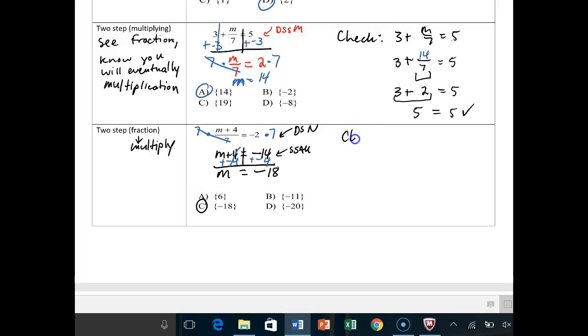Same as usual. M plus 4 over 7 equals negative 2. Being very careful that you copy that problem exactly how it was. Plug in your answer, negative 18 plus 4. Negative 18 plus 4 over 7 equals negative 2.